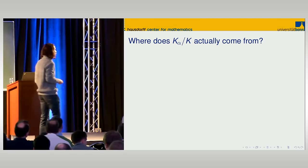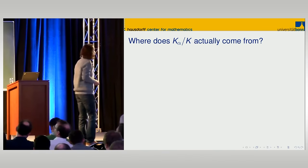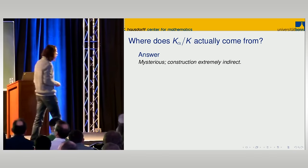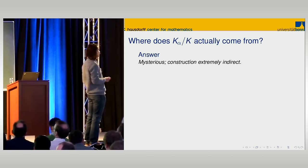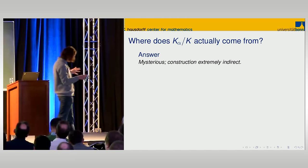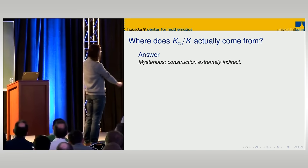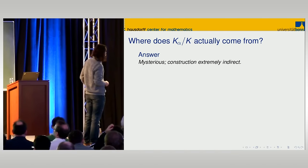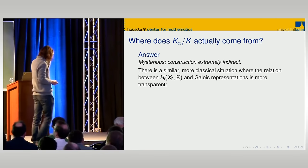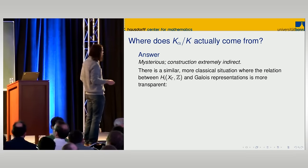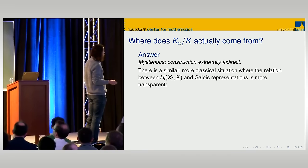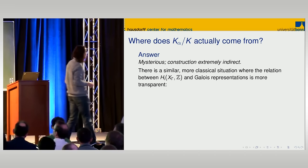How can we actually construct this extension? The construction is extremely indirect. There is a more familiar and classical situation — the modular curve — where the relation between homology groups and Galois representations is much more transparent, and I want to use that as a contrast.